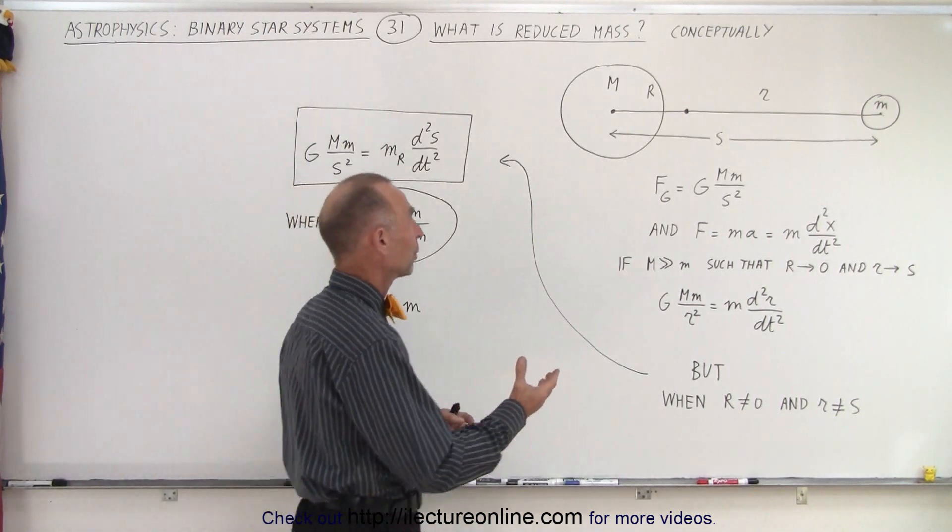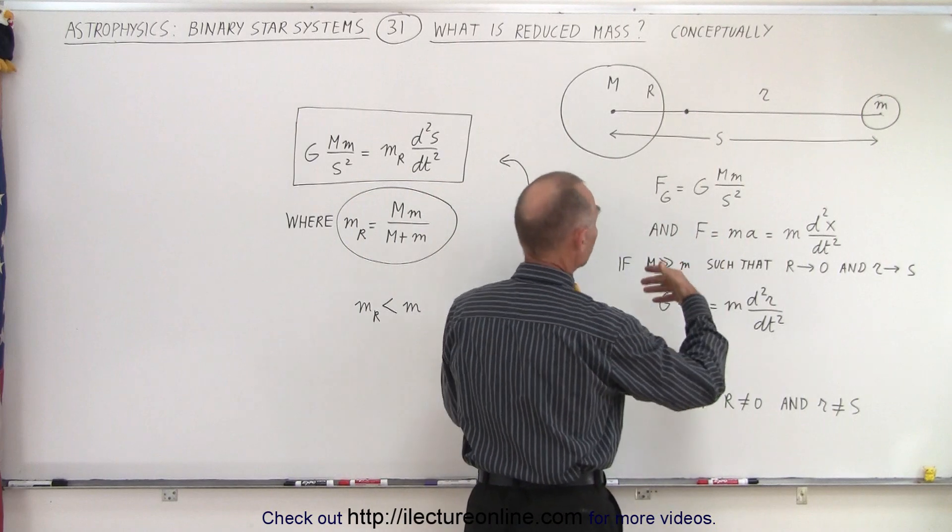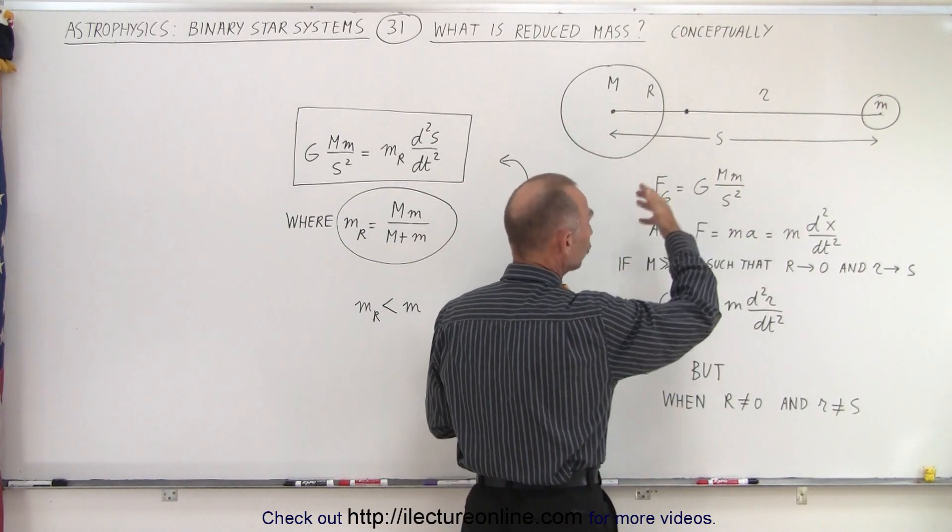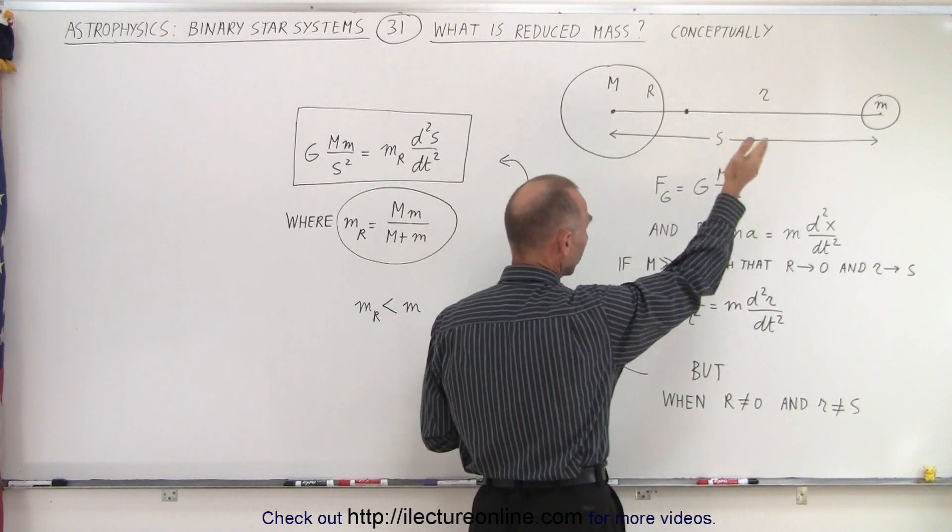Let's go back to a simple example where we have a binary system. It could be a moon and a planet, two stars, one being large, the other one being small.